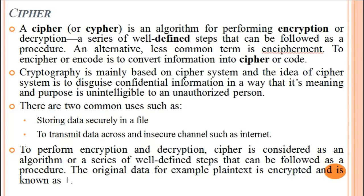There are two common uses of ciphers. First one: storing data securely in a file, and transmitting data across an insecure channel such as the internet through a wired network or an unwired network. To perform encryption and decryption, a cipher is considered as an algorithm or a series of well-defined steps that can be followed as a procedure.